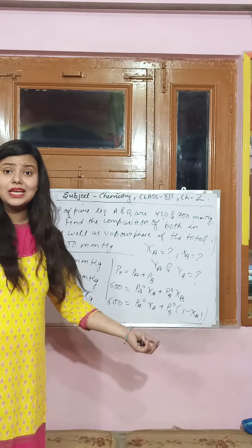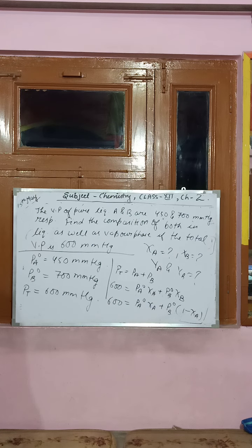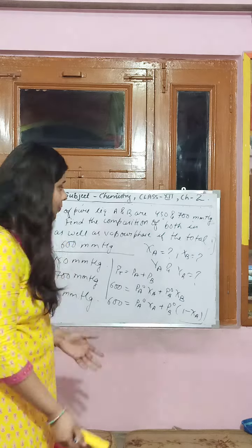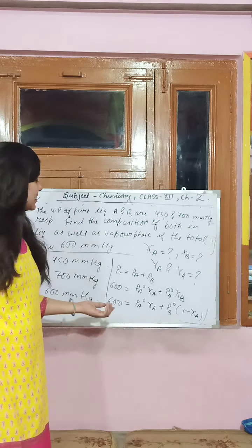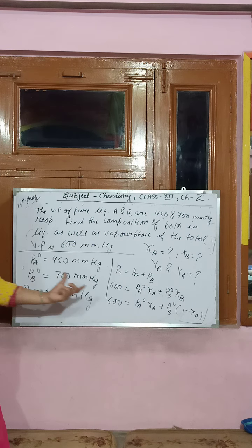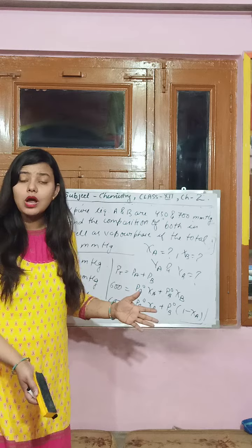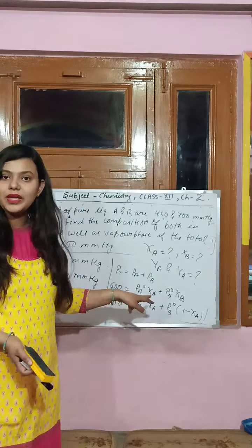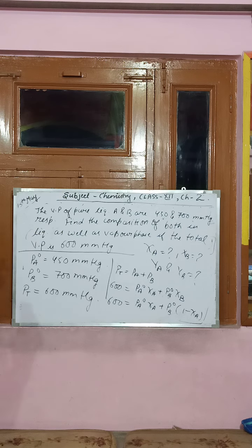To find the vapor phase composition, use the formulas: P_A = y_A · P_total and P_B = y_B · P_total. This gives you y_A and y_B. Sometimes in questions you may be given masses instead of mole fractions, or asked to find only P_A, P_B, or P_total — but the approach using Raoult's Law remains the same.